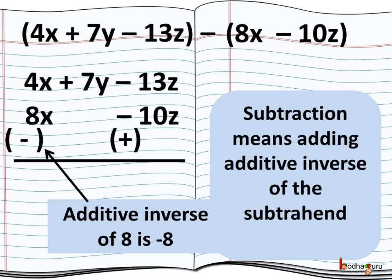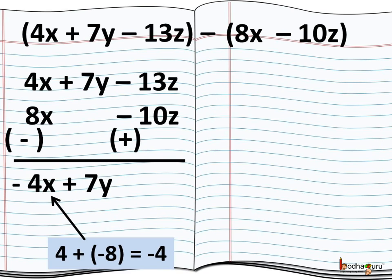So, we will change the sign of every coefficient while subtracting it from another expression. The terms 4x and 8x. 4 plus minus 8 needs to be added. So, while adding this, we need to put the sign of the number with the greater absolute value. So, the sign would be minus here. And 8 minus 4 is 4. Thus, we get the coefficient as minus 4. And the term is minus 4x.